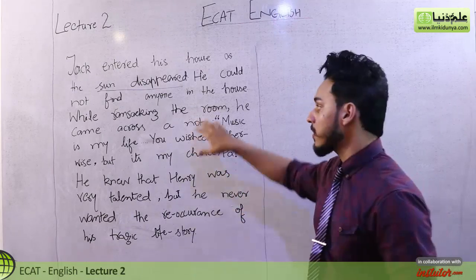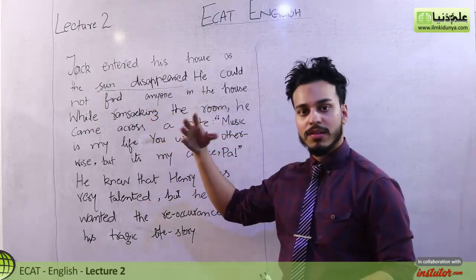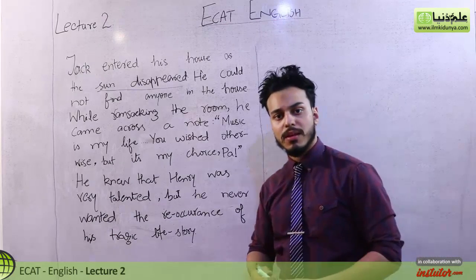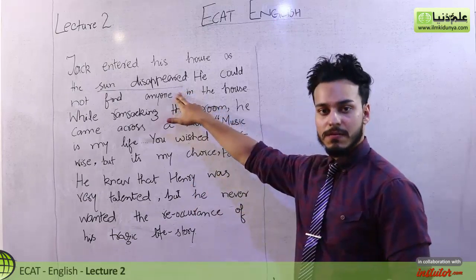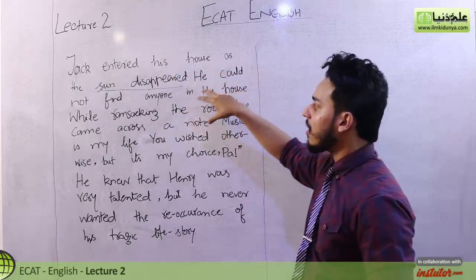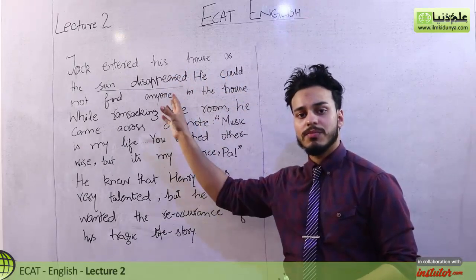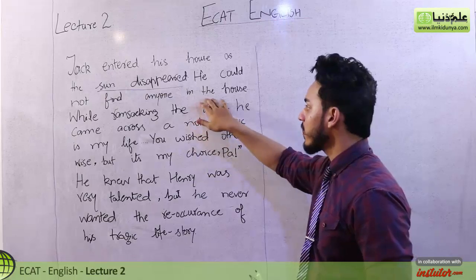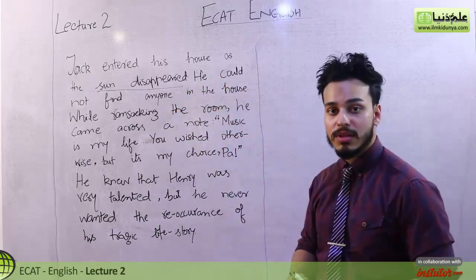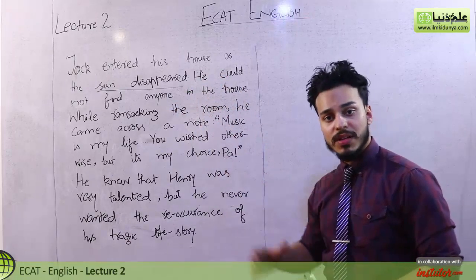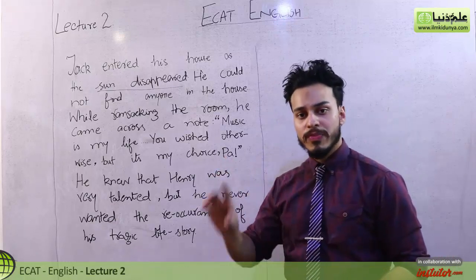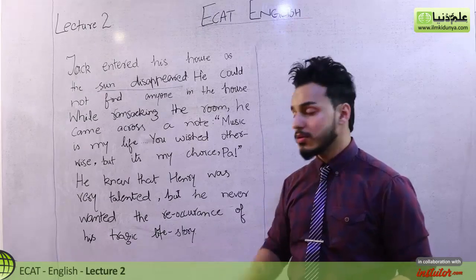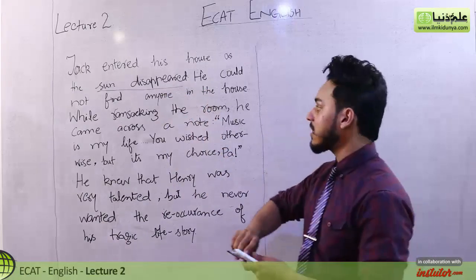We can infer that either it was night time because the sun is disappearing, or it was sometime before the evening, or afterwards, or it could be cloudy weather. But since Jack entered his house and a person is inside his house, normally it would be considered to be evening, because a person is normally home from the evening. So if the MCQ asks, 'Which time of the day is being talked about?' — time is not mentioned, but the disappearance of the sun is the hint. If your options are midday, morning, midnight, or evening, you would select evening because of this particular hint.